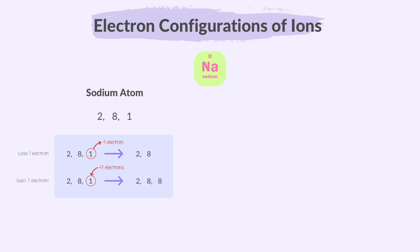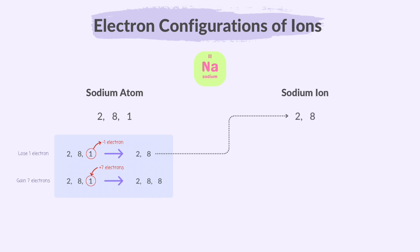Or, it can gain 7 electrons. Alternatively, it could gain 7 more electrons to its outer shell, but that's harder and less likely. Losing one electron is much easier, so that's what happens. Sodium gives away its extra electron to achieve a full outer shell. So, when a sodium atom, which contains 11 electrons, becomes a sodium ion, it loses one electron, leaving it with 10 electrons. The electron configuration of a sodium ion is 2, 8.